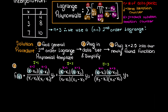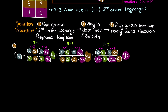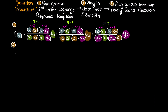Now that we have that written out, we just completed our first step in the solution. We must now plug in our data points and simplify, such that the Lagrange polynomial is fit to our specific problem.